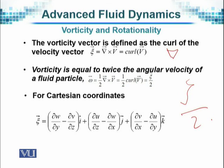In Cartesian coordinates with i, j, k unit vectors in x, y, z directions, the vorticity vector ζ is represented by (∂w/∂y - ∂v/∂z)i + (∂u/∂z - ∂w/∂x)j + (∂v/∂x - ∂u/∂y)k.